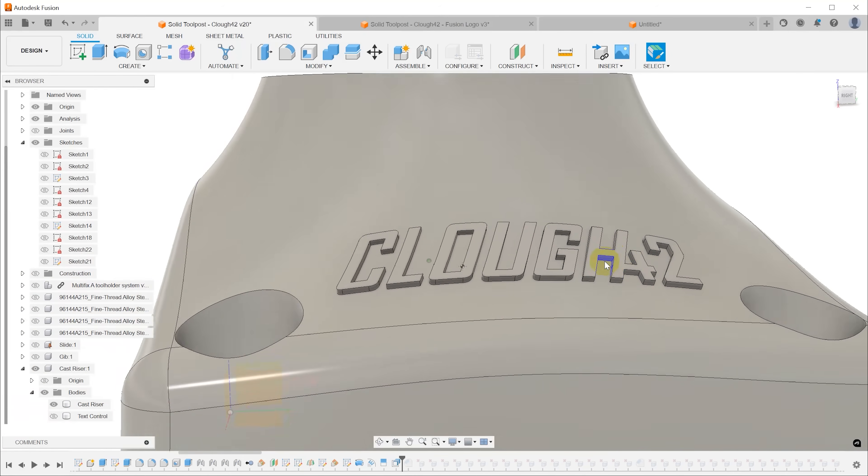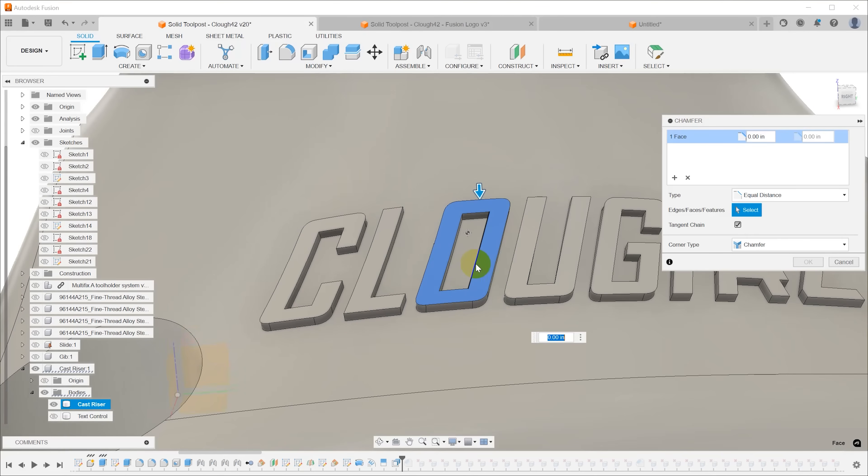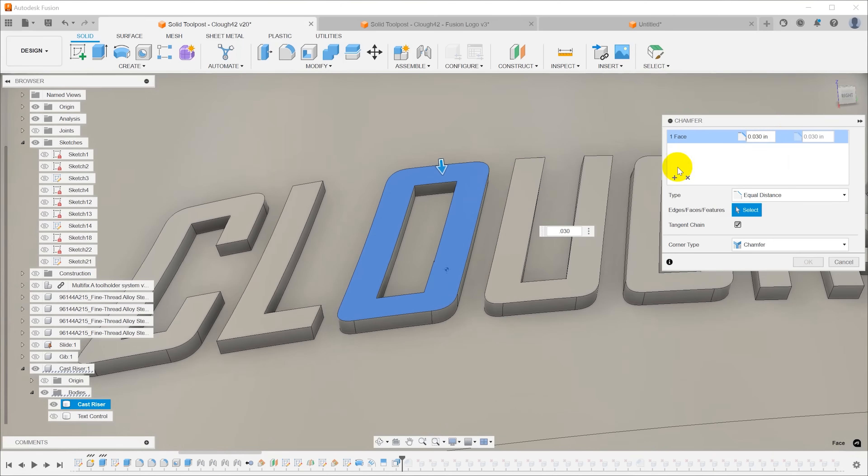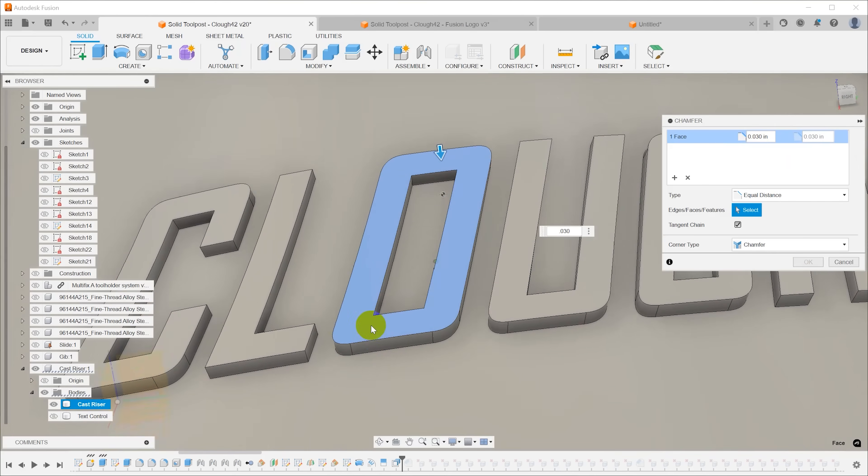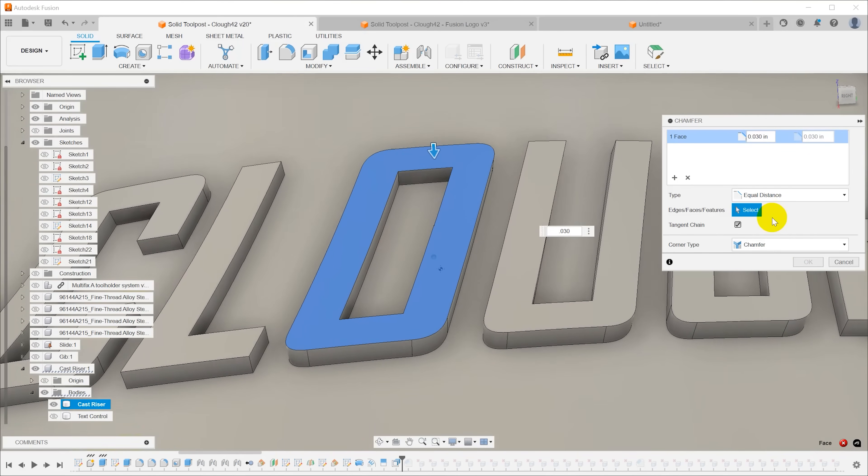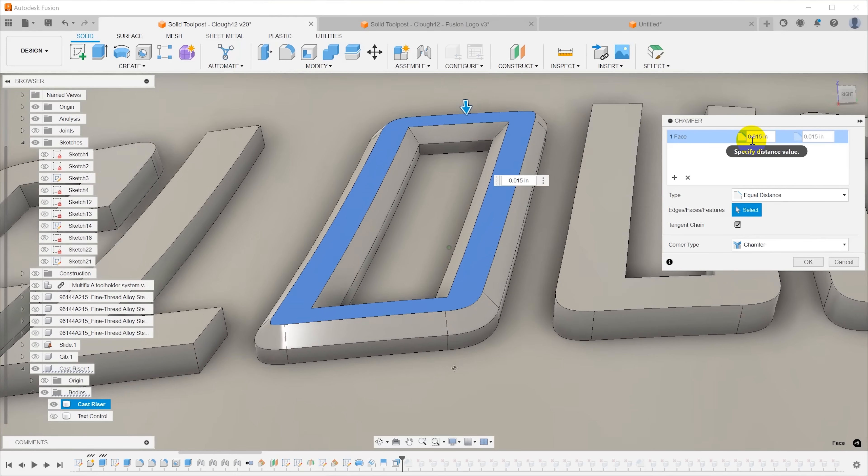So the obvious thing to do is to just chamfer this. Select the top of the letter, modify, chamfer. I know I pulled it up 30 thousandths, so 0.030. And it will not chamfer it. That's because there's some geometry problems going on. Now, we can do a smaller chamfer. So 0.015 will work. 0.02 will not. So 0.015, about half, is about the most I could do.